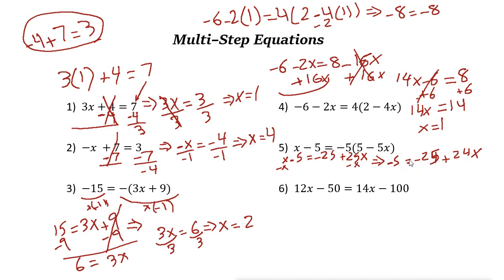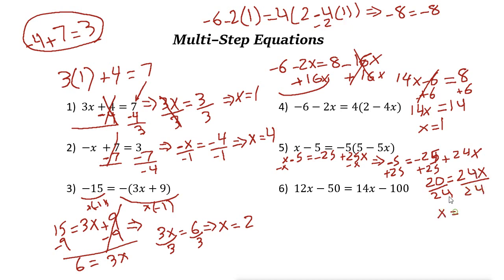Now let's add 25 to both sides. Negative 5 plus 25 is just 20, equals 24x. The next step: divide both sides by 24. x equals 20 over 24. Both sides are divisible by 4, so simplified it becomes 5 over 6. You can just plug this value back into the equation to check your answer.